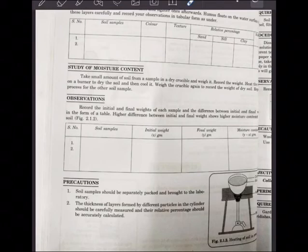Whatever observations you do, it will be in the form of a tabular column. Record the initial and final weights of each sample and the difference between initial and final weight. Higher difference between initial and final weight shows higher moisture content in the given soil. You have soil A and soil B. Initial weight, let us say 30 grams, final weight 20 grams. 30 minus 20, you get 10 grams, that is the moisture. For soil B, initial weight 100 grams, final weight 60 grams. 100 minus 60, 40 percent is the moisture content. Higher the moisture percentage in your soil, plants will grow nicely.